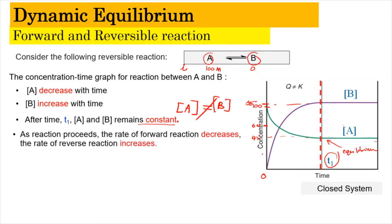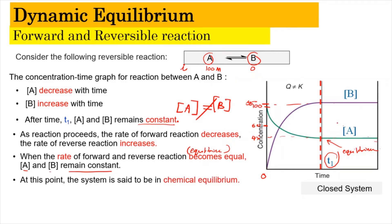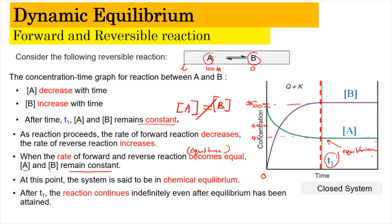As the reaction proceeds, the rate of the forward reaction will decrease and the rate of the reverse reaction will increase. When the rate of the forward and the reverse reaction becomes equal — which refers to equilibrium — we can say that the concentration of A and B remains constant. At this point, they have achieved chemical equilibrium. After time T1, the reaction still continues; it just goes in the same manner where the rate of the forward reaction is the same as the reverse direction. This is known as dynamic equilibrium.